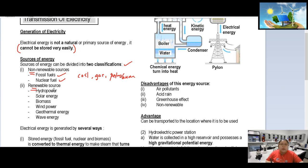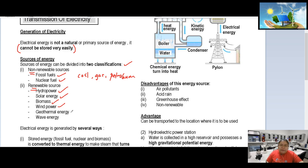Renewable sources can renew naturally after use. Examples include hydropower using water, solar energy from sunlight, biomass from organic waste, wind power, geothermal energy from heat below the ground, and wave energy. These are all called renewable sources.